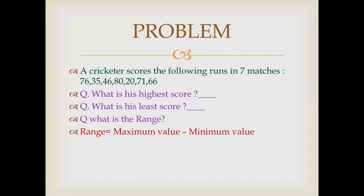What is the range? Range is the maximum value minus minimum value. So the answer would be 60. And how we obtain it? By putting the maximum value 80 and minimum value 20. 80 minus 20 will give us 60.